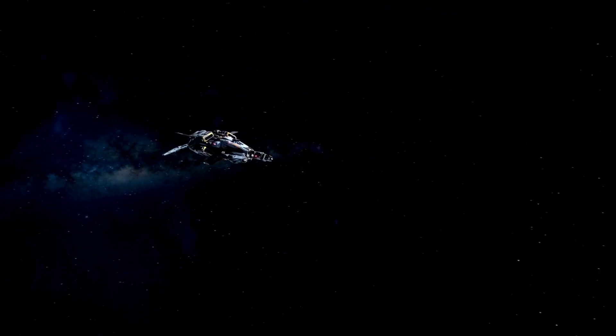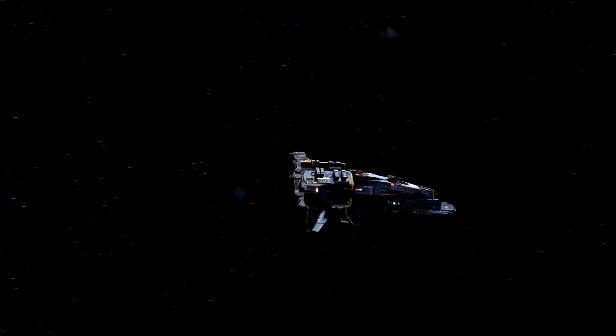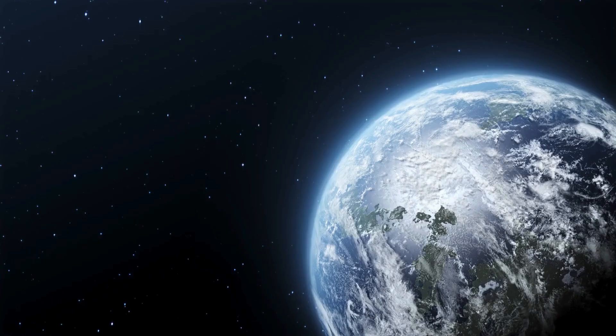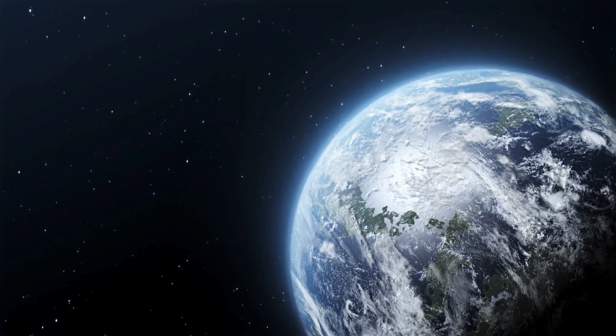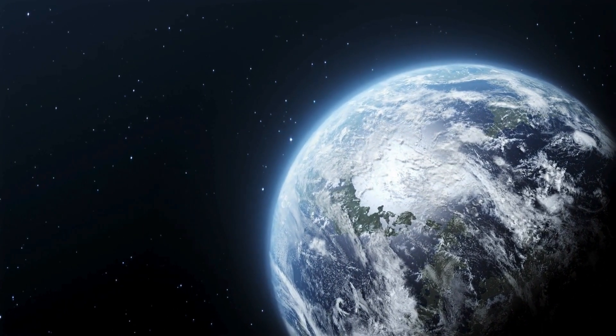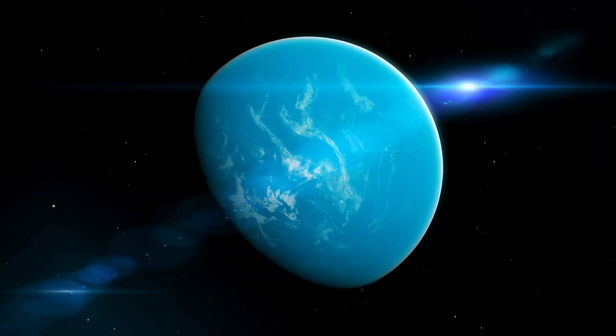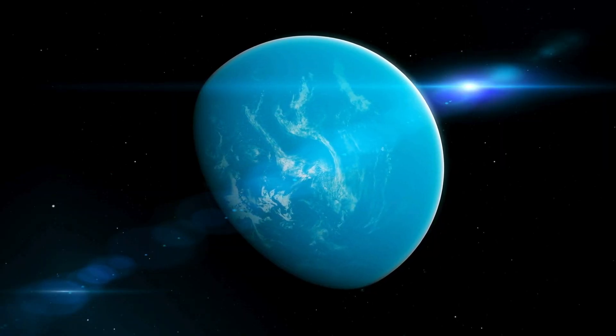Let's talk about Proxima Centauri b, the star that orbits the Red Dwarf Proxima Centauri and forms part of the Alpha Centauri triple star system. This system is made up of Rigel Centauris or Alpha Centauri a, Alpha Centauri b, and Proxima Centauri or Alpha Centauri c, creating the nearest star system to our solar system.